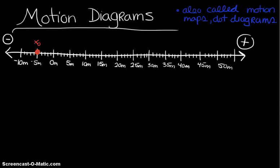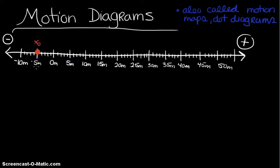The first thing we want to do is add a dot that shows the initial position of the object. For this particular example, the object's initial position is at the negative five meter mark, and I mark that with x sub zero for x initial. The next thing we want to do is add dots for each subsequent position, labeled x1, x2, x3, and x4.